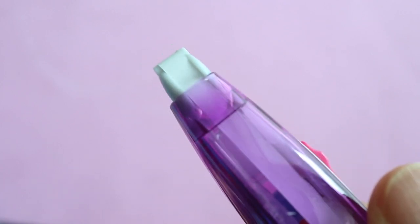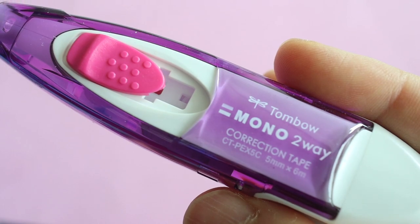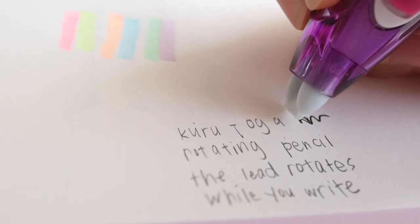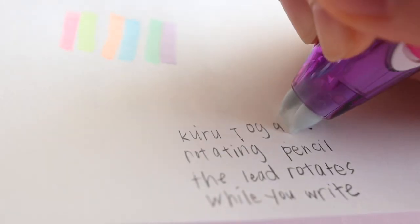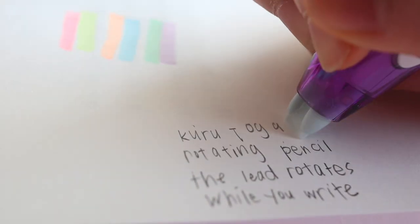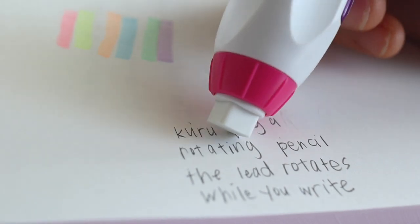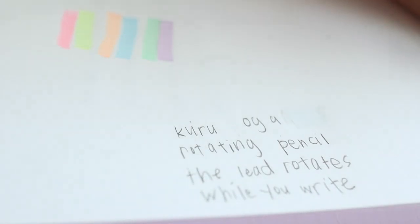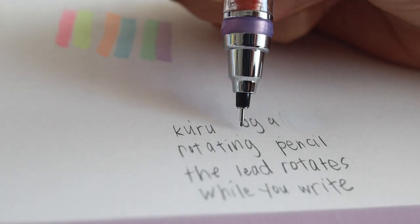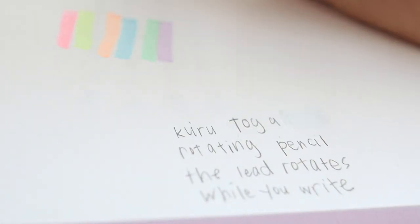If your eraser or your correction tape runs out, then you can get a refill of both. Let me show you how precise this eraser can be. You can erase a single letter and fix it without having to erase the other letters or rewrite anything.